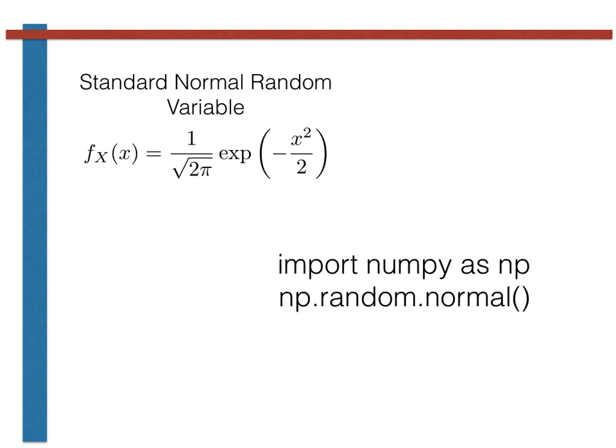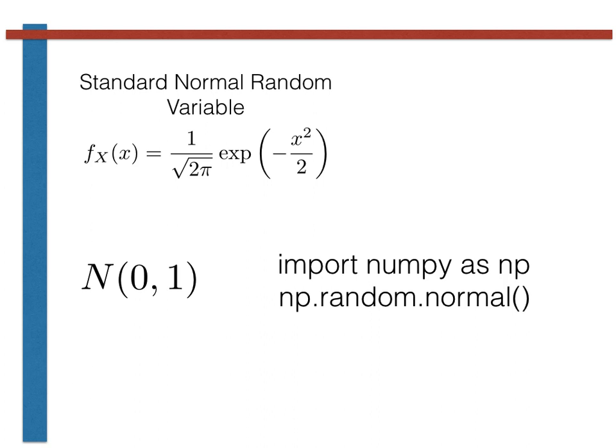This function is called using the code shown here. This code will generate a standard normal random variable from the distribution shown at the top of the slide, i.e., it will generate a normal random variable from a distribution that has an expectation of 0 and a variance of 1. If, by contrast, you would like a random variable from a normal distribution with an expectation of mu and a variance of sigma squared, you simply take a standard normal random variable that is generated using the code above and transform it as shown at the bottom of this slide.